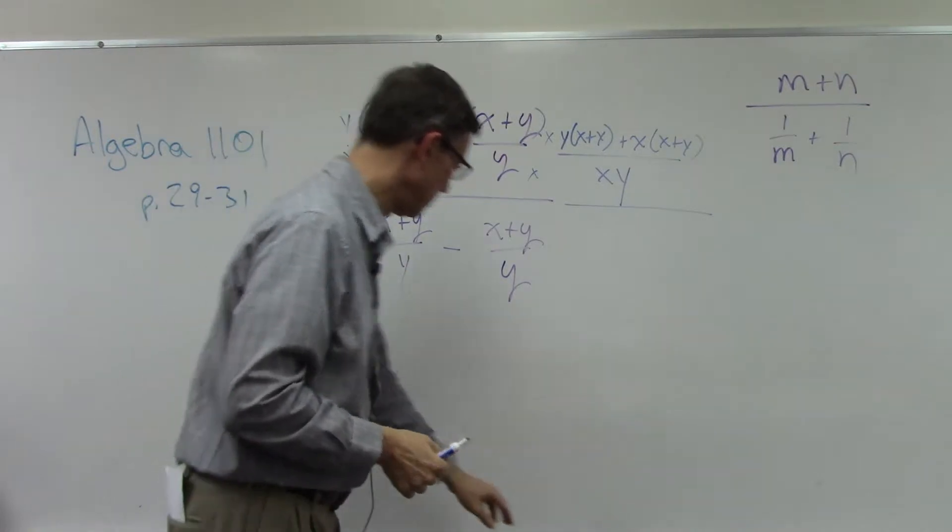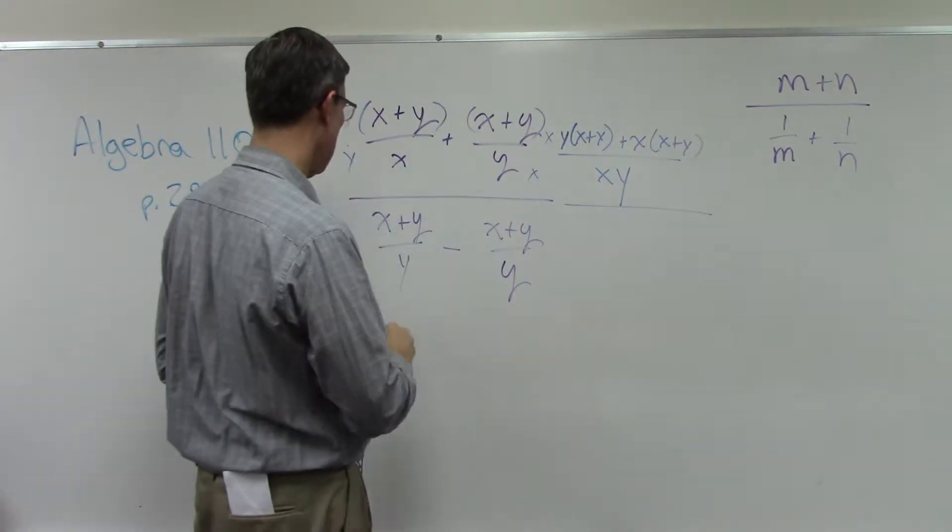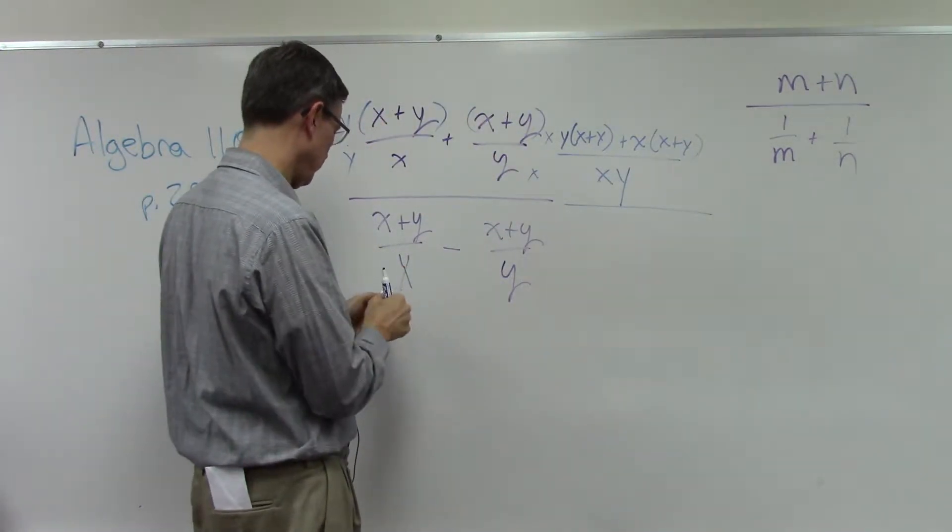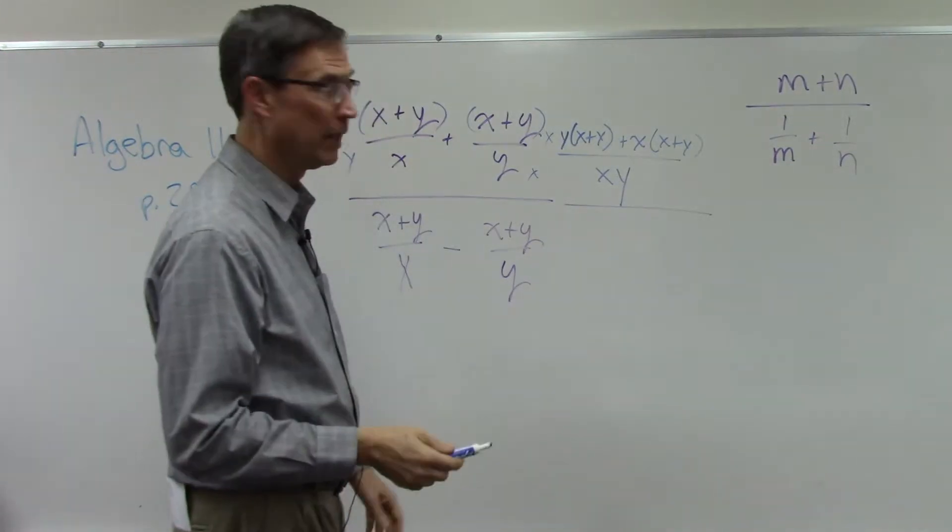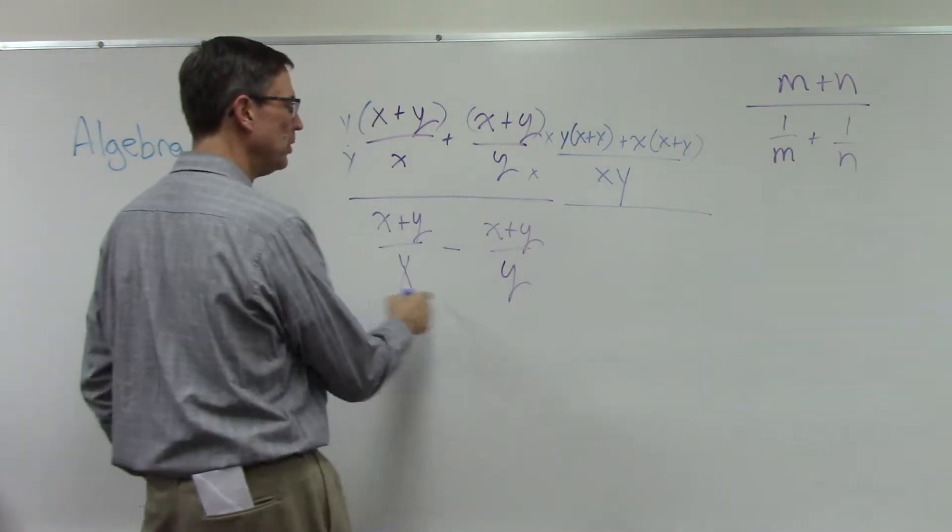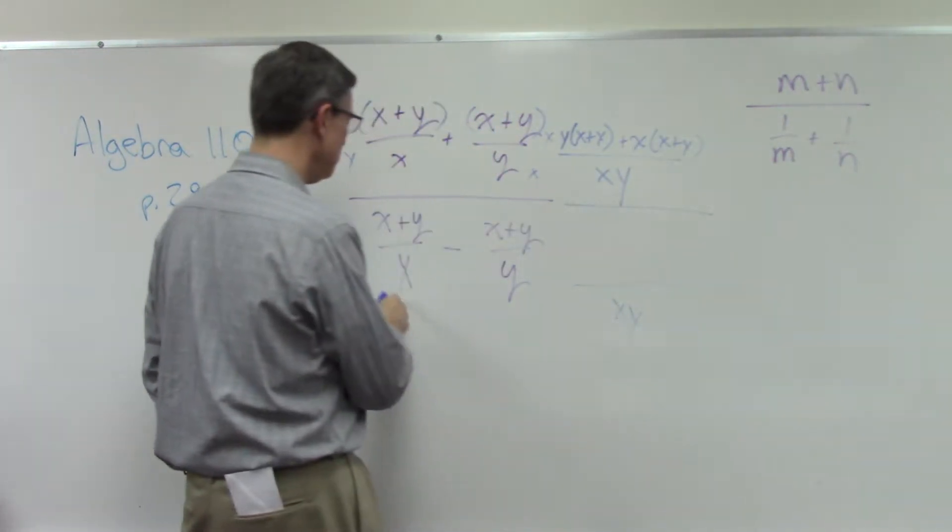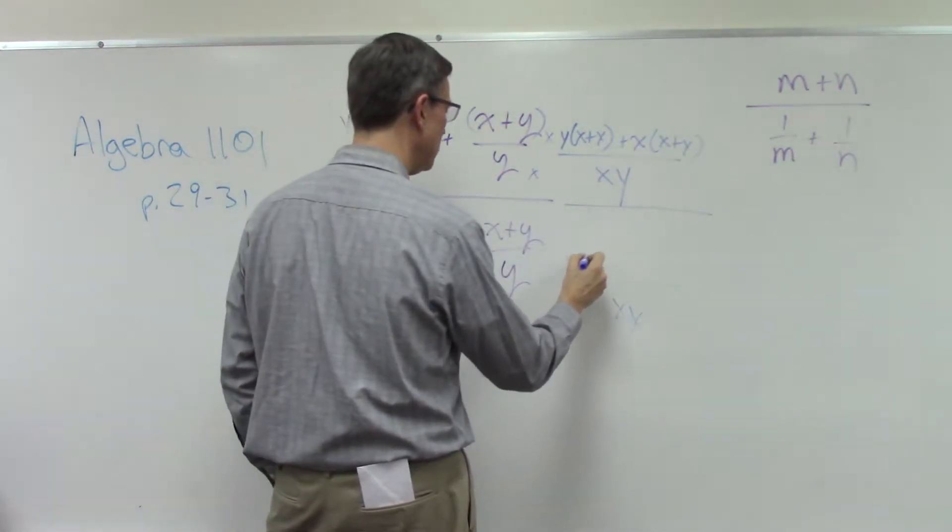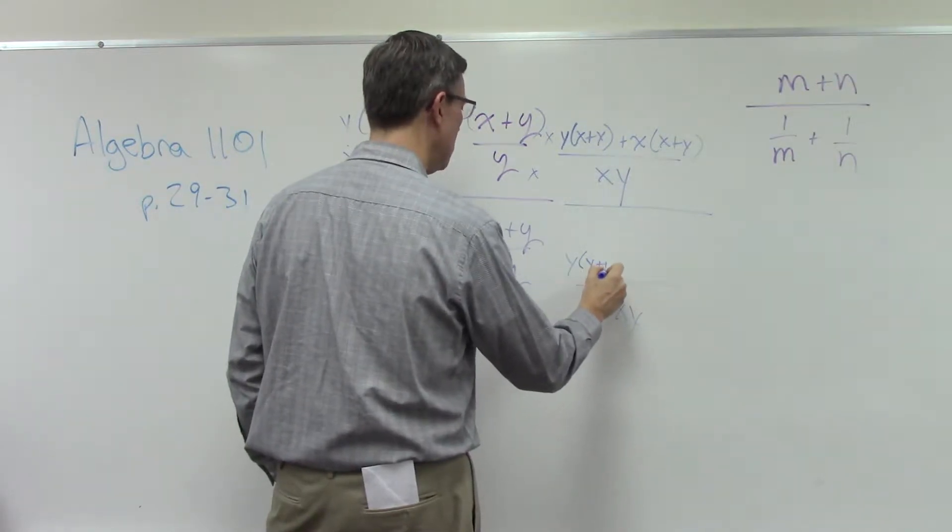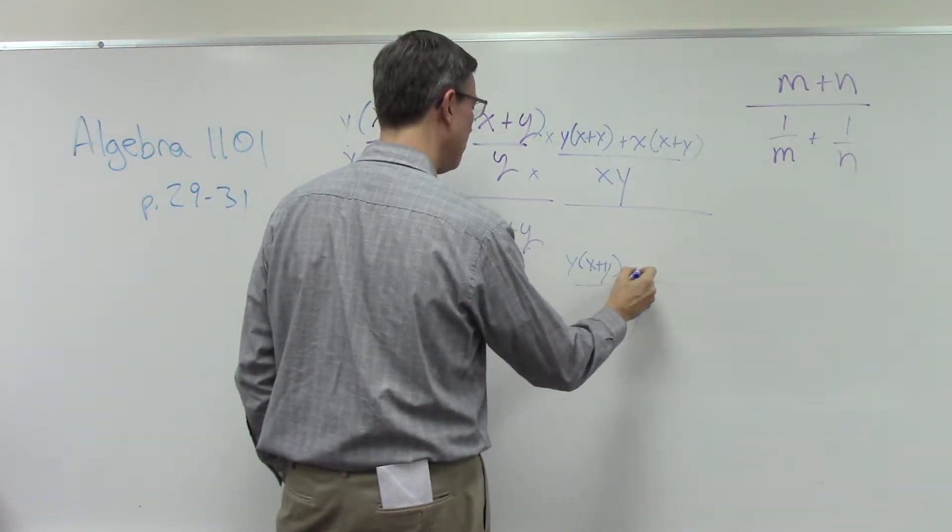We're going to do something similar down here. This, I think, was supposed to be an x. We're going to make it an x. So this one, similarly to get the denominator of xy, is missing y. So y times x plus y minus,